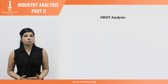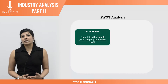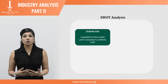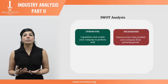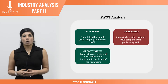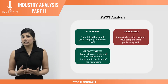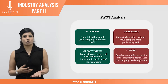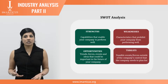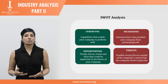A SWOT usually comprises four quadrants. Strengths are capabilities that enable your company to perform well. Weaknesses are characteristics that prohibit your company from performing well. Opportunities are any trends, forces, events and ideas that could be important in the future of your company. And finally, threats are possible events or forces outside of the company's control that the company needs to plan for.